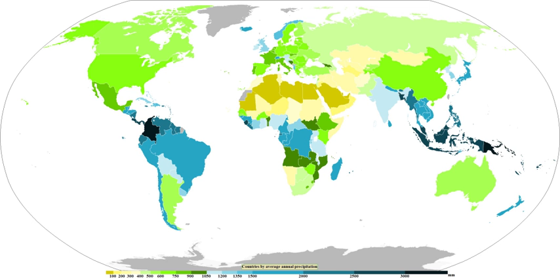Mechanisms of producing precipitation include convective, stratiform, and orographic rainfall. Convective processes involve strong vertical motions that can cause the overturning of the atmosphere within an hour and cause heavy precipitation, while stratiform processes involve weaker upward motions and less intense precipitation. Precipitation can be divided into three categories based on whether it falls as liquid water, liquid water that freezes on contact with the surface, or ice. Mixtures of different types of precipitation, including types in different categories, can fall simultaneously.